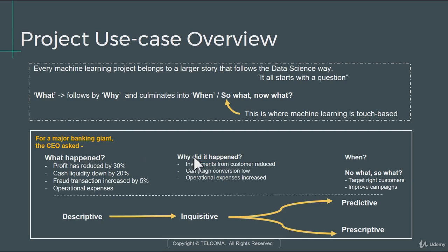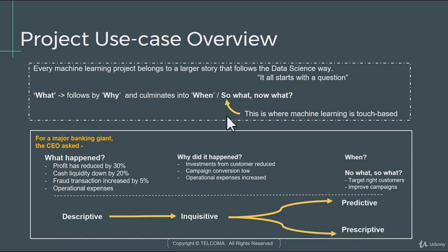The next follow-up question would be: why did it happen? You might get answers like: we did an analysis, we explored the data, we tried to understand what reasons contributed towards these issues. We understand that this crisis has primarily happened because investments from customers have reduced. The campaigns we have been conducting have a lower conversion rate. And because operational expenses have been increasing, that has affected the profit margins. So you have a larger understanding of what happened, and a fair amount of understanding of why it happened.